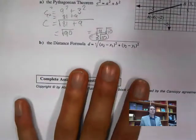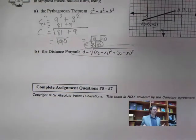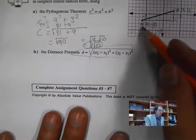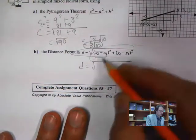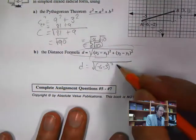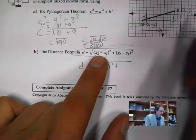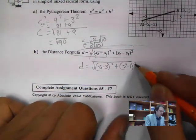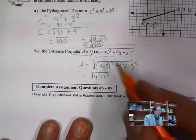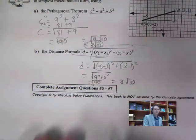The second part uses the distance formula, which is essentially the same as the Pythagorean theorem: d equals the square root of the change in x squared plus the change in y squared. Plugging in: negative 6 minus 3 squared plus negative 2 minus 1 squared. That gives the square root of 90, which equals 3 root 10 — same answer.